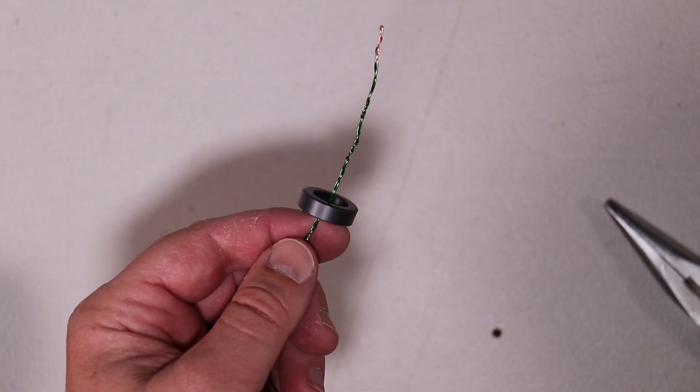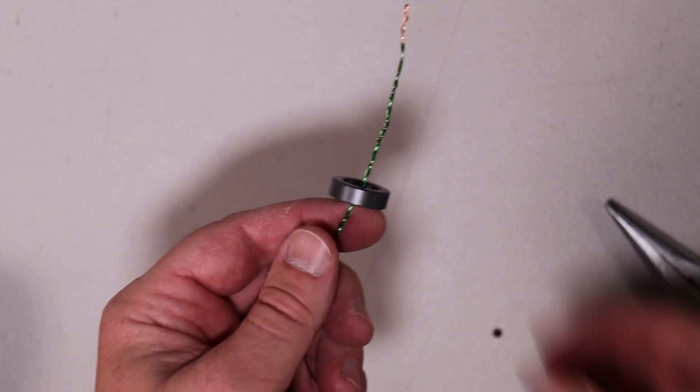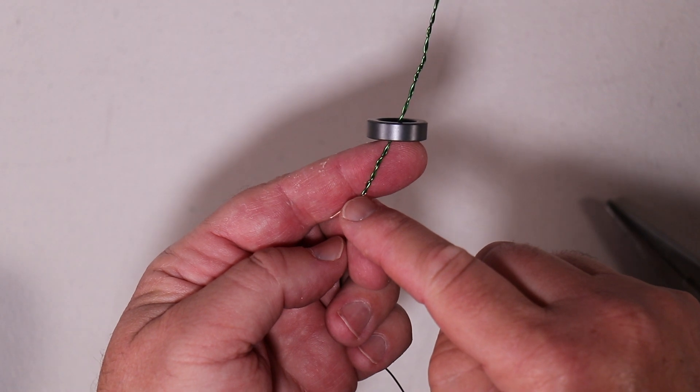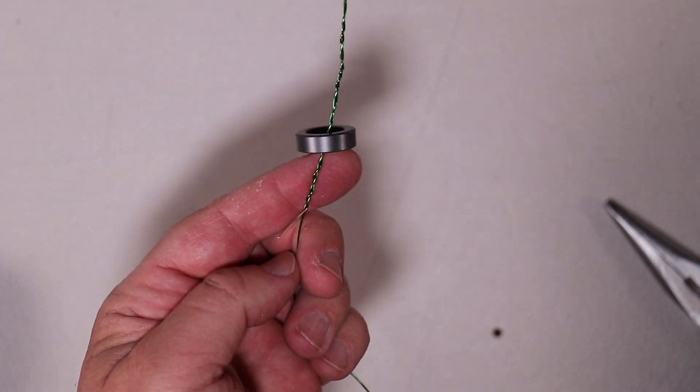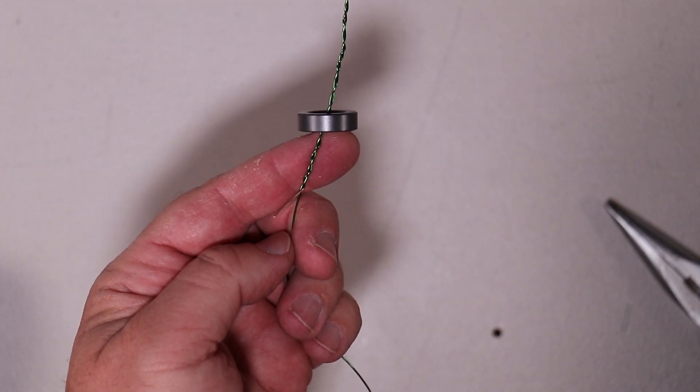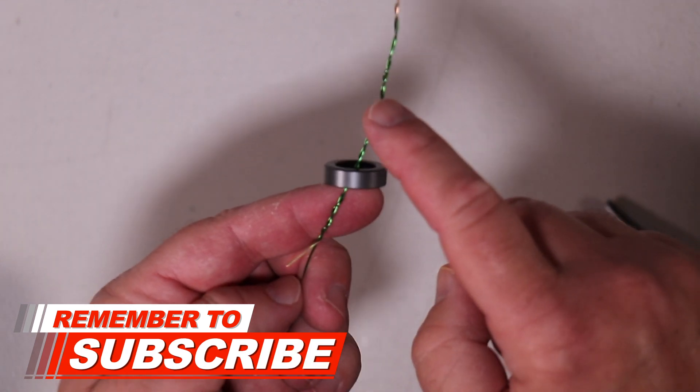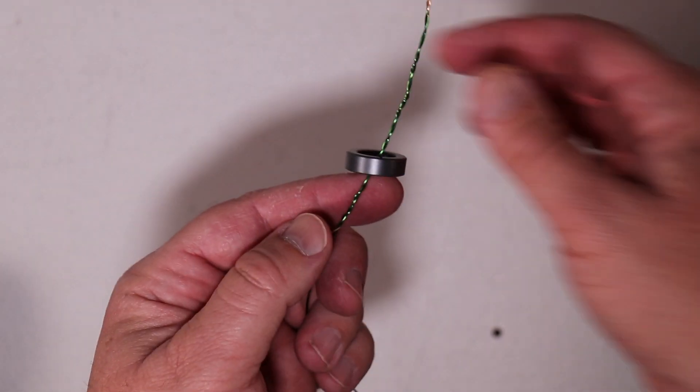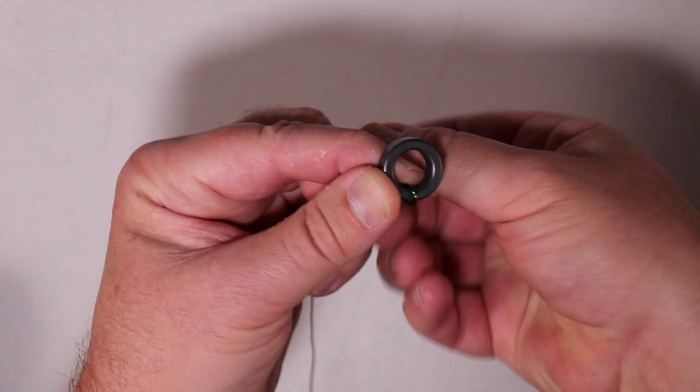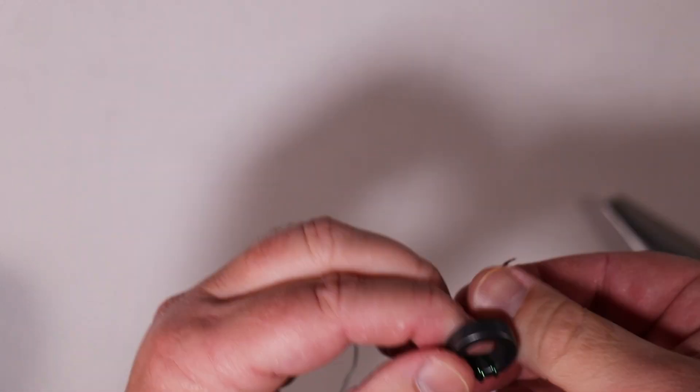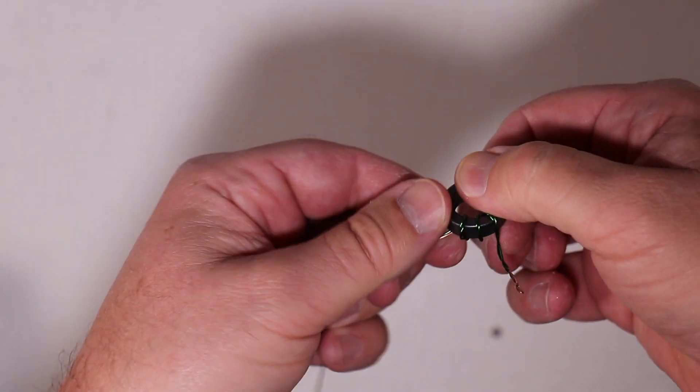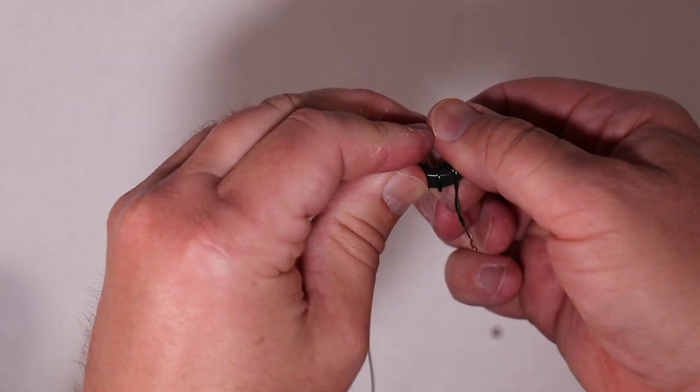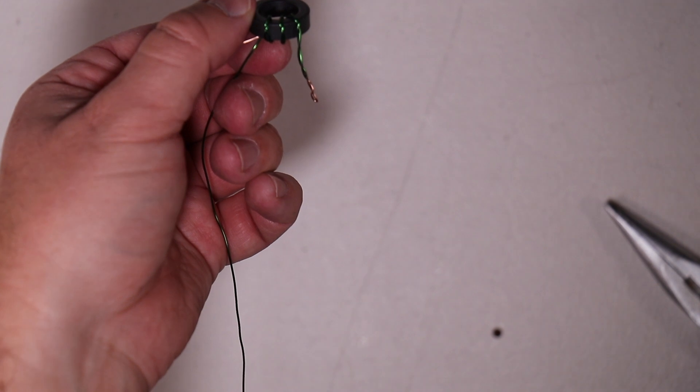Okay now you're going to start winding the toroid and what you want is about 5/8 of an inch sticking out from the bottom of the toroid and you're going to do three loops with the wound end that you just finished and there you have your three turns.